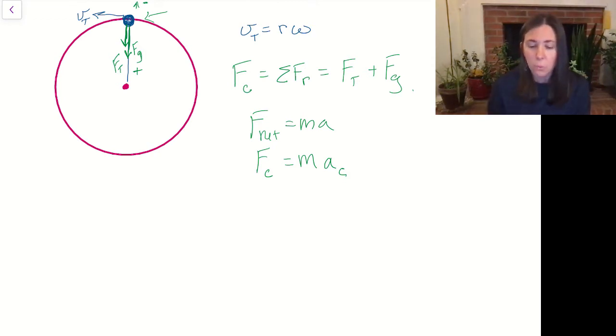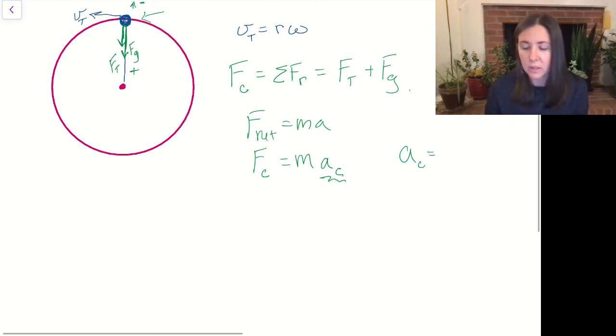Now we found this equation earlier, the centripetal acceleration, ac is just the tangential velocity squared over the radius of the circle. So how fast is this going and how big is the circle that it's making?